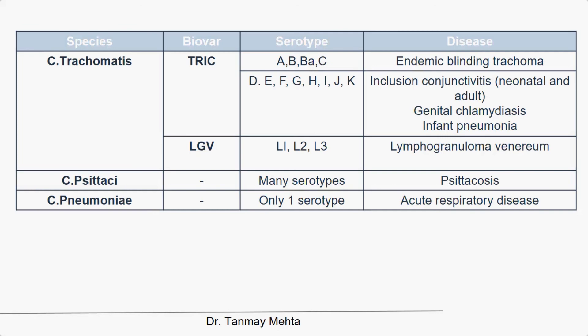C. trachomatis has two biovars. The trachoma biovar has serotypes A–C causing trachoma (follicular conjunctivitis) and serotypes D–K causing inclusion conjunctivitis, genital infections, and infant pneumonia. The LGV biovar (L1, L2, L3) causes lymphogranuloma venereum, a sexually transmitted disease. C. psittaci causes psittacosis — atypical interstitial pneumonia in people exposed to birds, mainly parrots. C. pneumoniae has one serotype and causes acute respiratory disease.